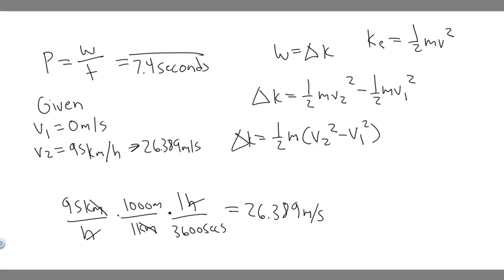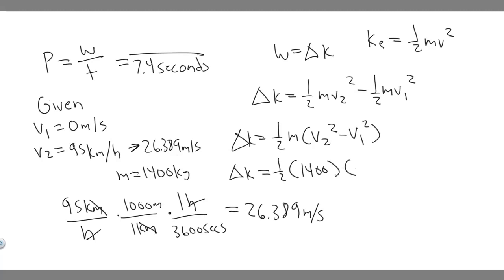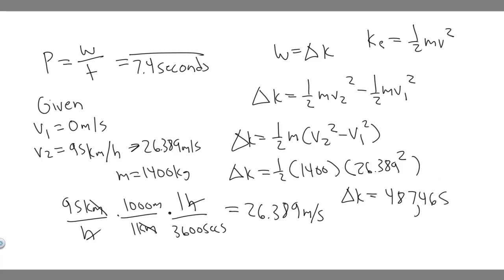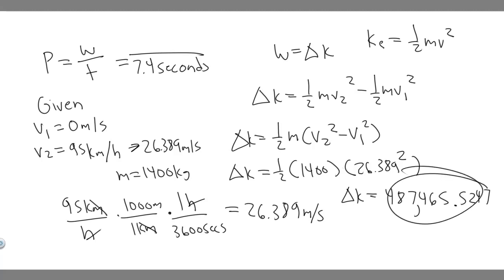Now we plug in: the change in kinetic energy equals ½ times 1,400 kilograms times (26.389² minus 0²). That simplifies to 700 times 26.389 squared, which gives a change in kinetic energy of 487,465.5247 joules.